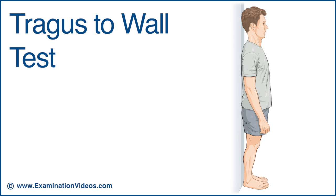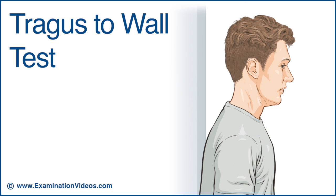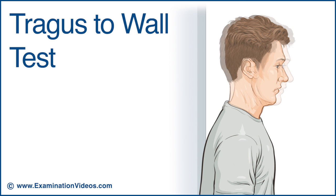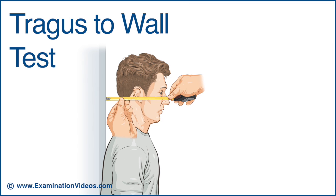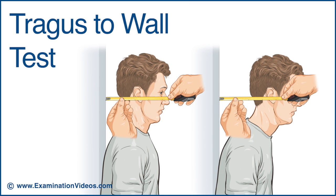Normally, the skull should reach the wall. If the patient is unable to reach the wall, it indicates a cervical flexion deformity. Measure and record the distance between the tragus of the ear and the wall. This provides a baseline measure for future comparison to monitor the increase in cervical flexion deformity over time.